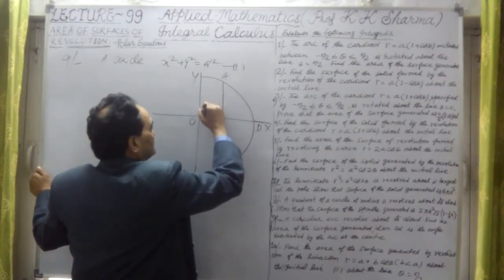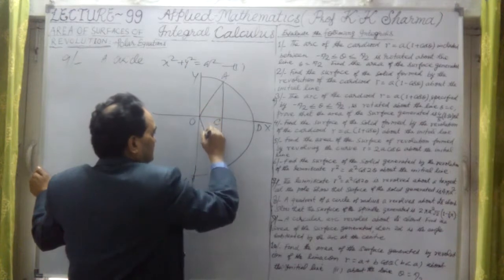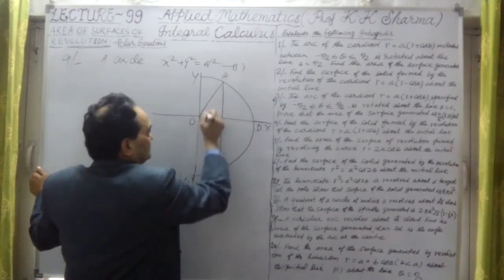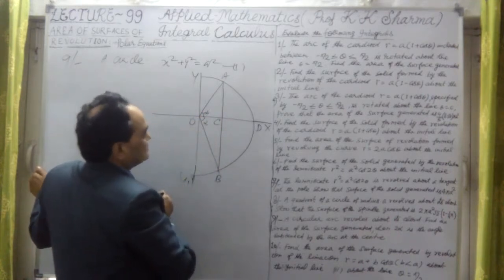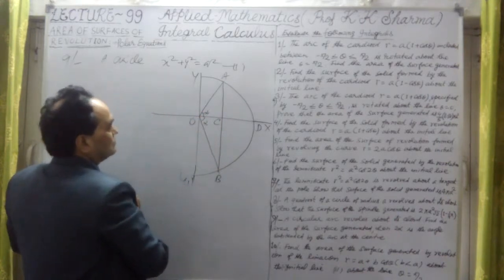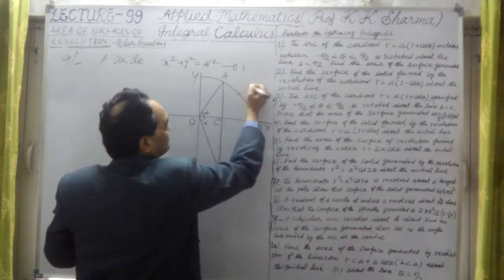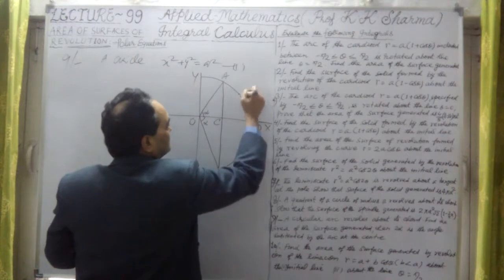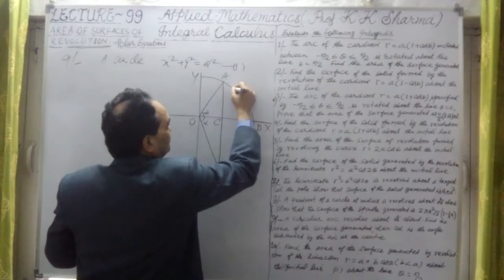I would say this chord is subtending an angle at the center of twice alpha — that means alpha here and alpha here. These two angles are alpha, alpha. So if I take any point P here on this arc, let me take P point here.